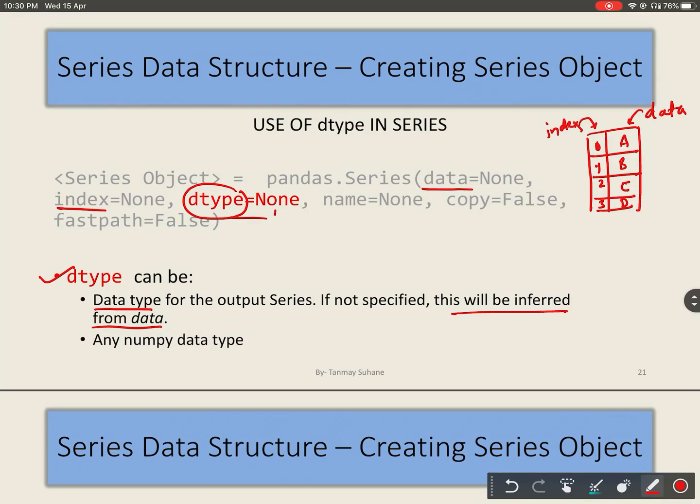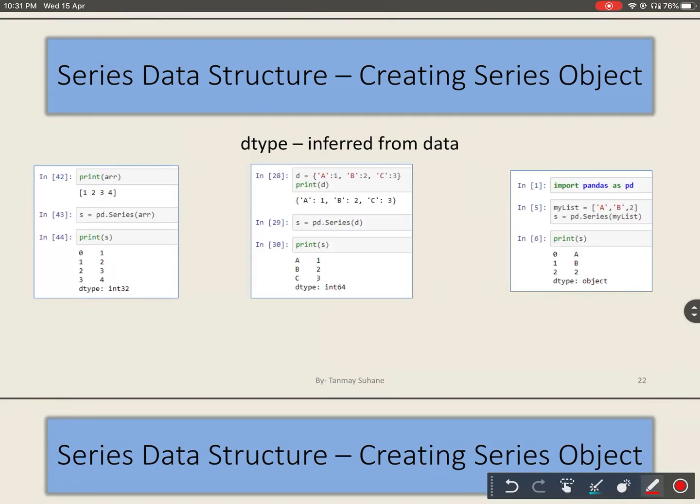We can provide our own data type at the time of series creation. We can provide any numpy data types. Let us now take different examples and see what data types Python takes automatically.